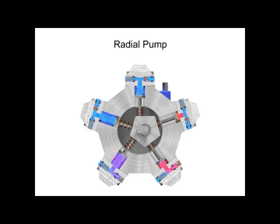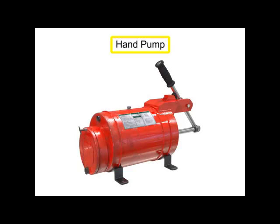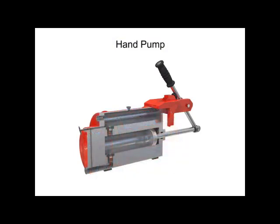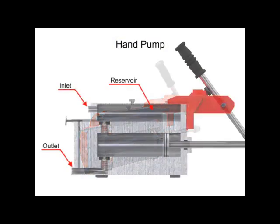Hand pumps are used when a source of power is not available or where the extra expense of a power pump isn't warranted. For example, they are used on shop presses and other portable equipment, serve as standby pumps, and serve as sources of emergency power. Hand pumps are always of piston type and are usually constructed with a piston working between two check valves.